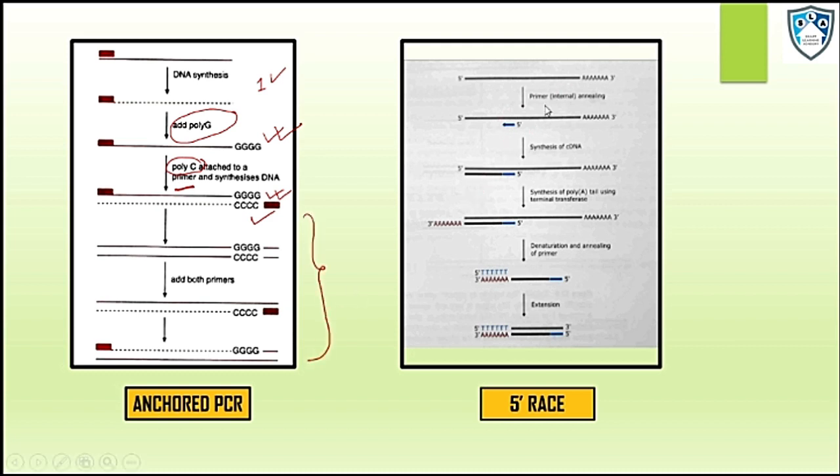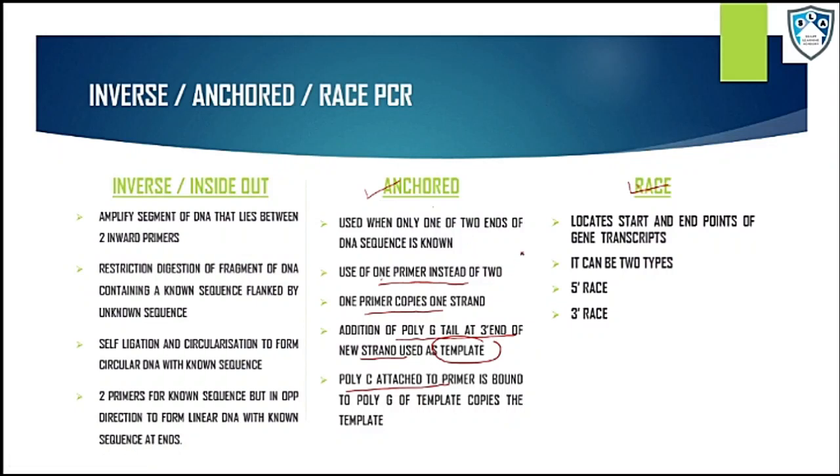Similarly, in RACE, which is used to locate the start and end points of the transcript, it has been divided into two types: five prime RACE and three prime RACE. Both are performing similar functions but at different directions.